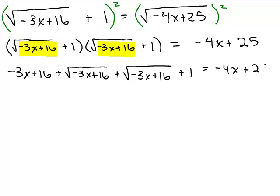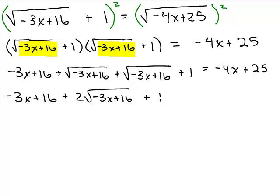You could also use the formula for squaring a binomial and get exactly the same thing: negative 3X plus 16, that's squaring the first term, plus 2 times the first term times the second term, which is 2 times the square root of negative 3X plus 16, plus 1. That's where the 2 square roots of negative 3X plus 16 comes from.